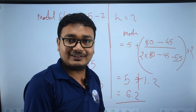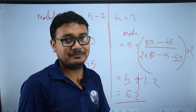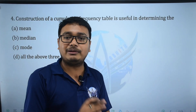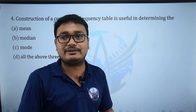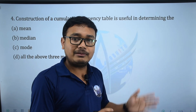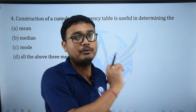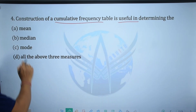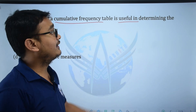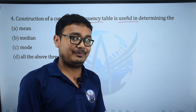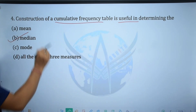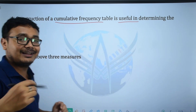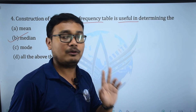Now moving to the MCQ section. We've already discussed mean, mode, and median. The first MCQ: construction of a cumulative frequency table is useful in determining — mean, median, mode, or all of the above? The answer is median, because cumulative frequency is used specifically to find the median.